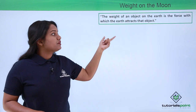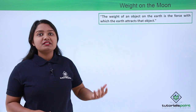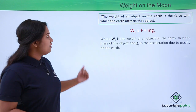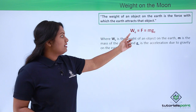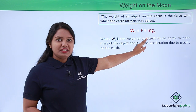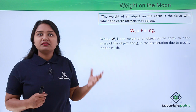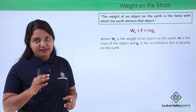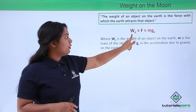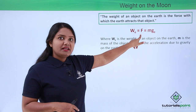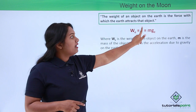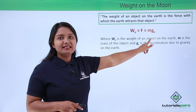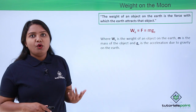The weight of an object on the earth is the force with which the earth pulls or attracts that object towards itself. That force or weight is given by M into g, that is the product of the mass of the body and the acceleration due to gravity of earth. So W is the weight of the body, equal to M into g_e, where g_e is the acceleration due to gravity of earth.